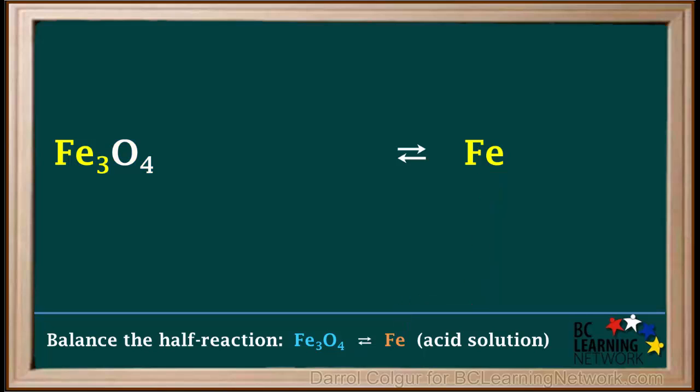We start by balancing atoms that are neither oxygen nor hydrogen. In this example, it is the atoms of iron we must balance. We see we have three iron atoms on the left and only one on the right. So, to balance iron, we add three here in front of the Fe. Now we have three Fe atoms on both sides.